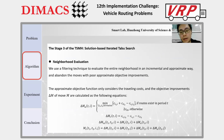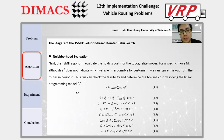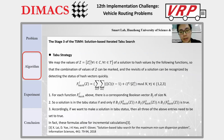Next, the TSMH algorithm evaluates the holding cost for the top pi-e elite moves. For a specific move on Z-I-T, this does not directly indicate which vehicle is responsible for customer i. We can figure this out from the routes in period t. Thus, we can check feasibility and determine the holding cost by solving the linear programming model LP. For the taboo strategy, we map the values of Z of a solution to hash values by specific functions, so that the combination of Z values can be marked and revisits of a solution can be recognized quickly by detecting the status of hash boolean vectors.